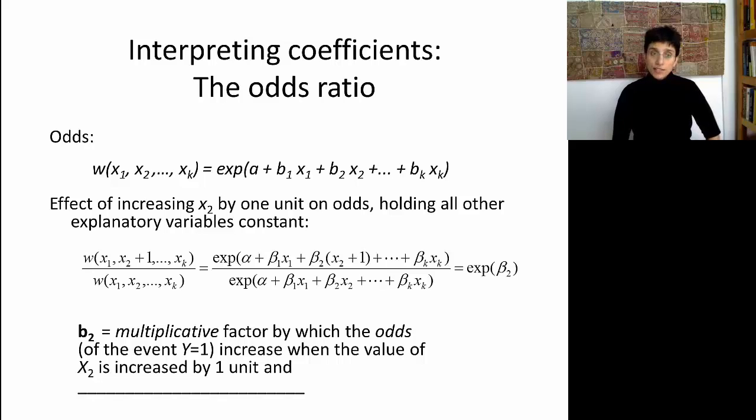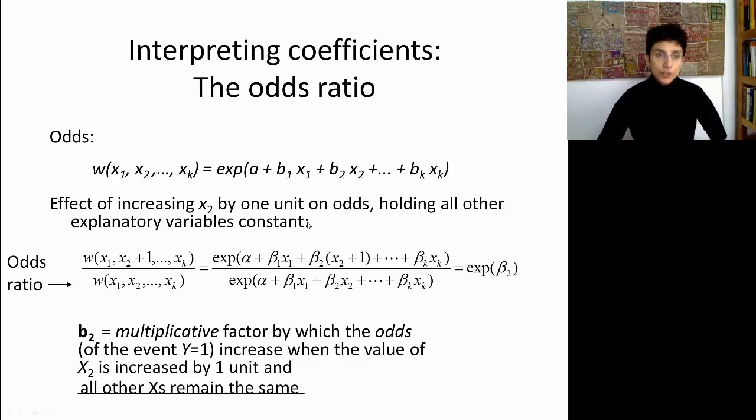So now look at the beginning and at the end. What this is telling me is that beta 2 is a multiplicative factor by which the odds of the event of interest increase when we increase the value of x2 by a single unit. And, of course, we might want to remember that we held all the other variables constant. So once again, increasing a predictor by a single unit is going to affect the outcome by a factor of exponent to the beta 2.